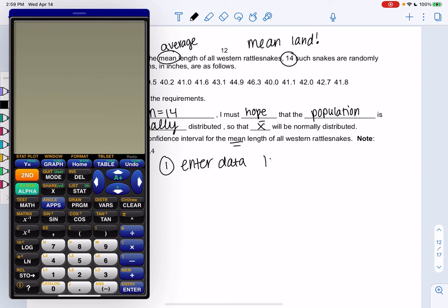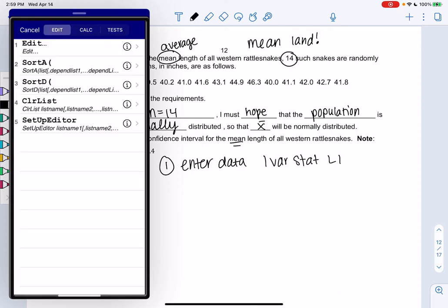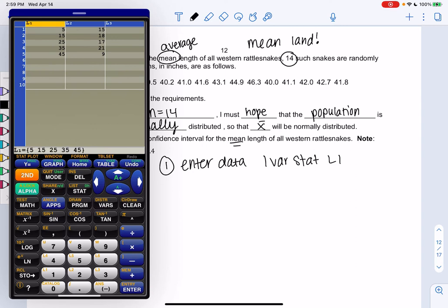And we'll do 1var stat so that we can find the mean and standard deviation. So enter the data into L1. So I'm just going to type it a little quickly. Pause if you want to take your time doing this, or if you need to go find your calculator.